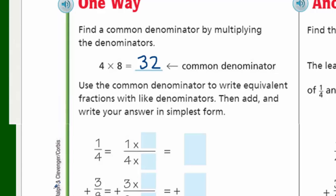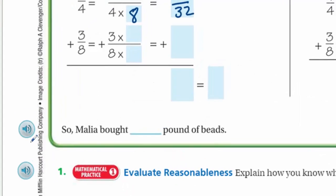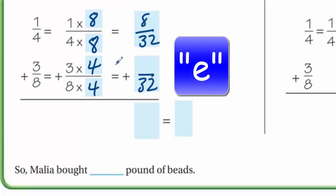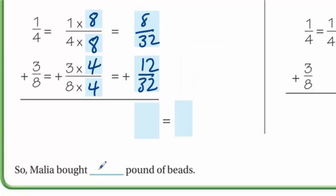Something I want to make sure that you know is that in order to add fractions with unlike denominators, we have fourths and eighths, that we first need to write equivalent fractions with like denominators. And something to just remind you is that multiplying the denominators will always produce a common denominator. So, four times eight is 32. So, 32 is a common denominator.